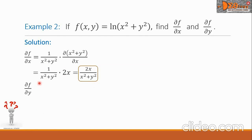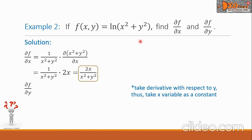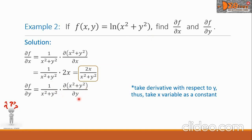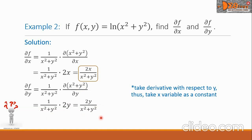Then, the partial derivative of f with respect to y. We take the derivative with respect to y, treating x as a constant. By the chain rule, this equals 1 over (x squared plus y squared) times the partial derivative of (x squared plus y squared) with respect to y. The derivative of x squared is 0, and the derivative of y squared is 2y. So f sub y equals 2y over (x squared plus y squared).